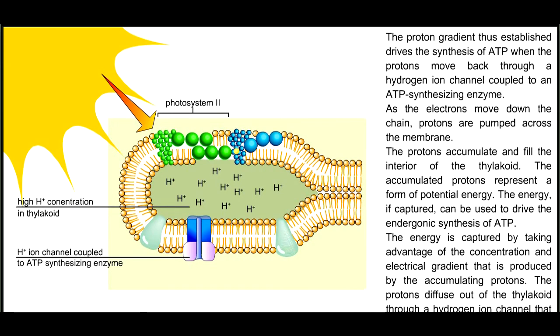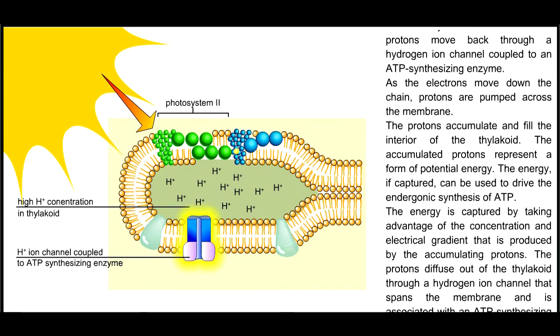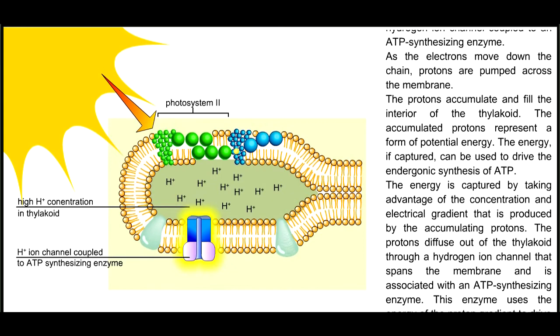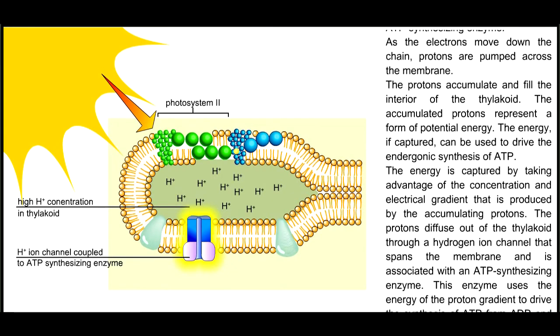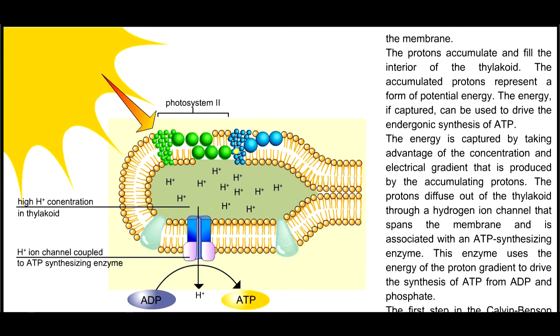The protons diffuse out of the thylakoid through a hydrogen ion channel that spans the membrane and is associated with an ATP synthesizing enzyme. This enzyme uses the energy of the proton gradient to drive the synthesis of ATP from ADP and phosphate.